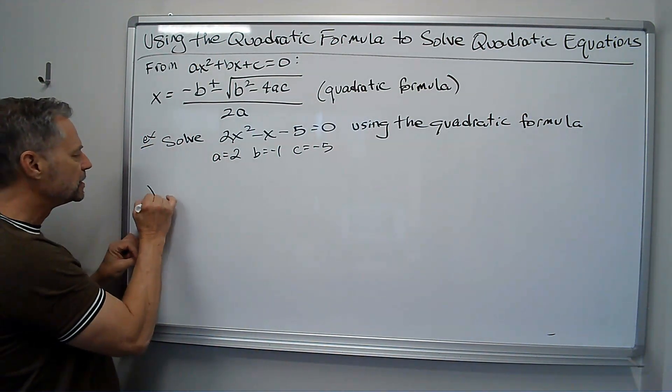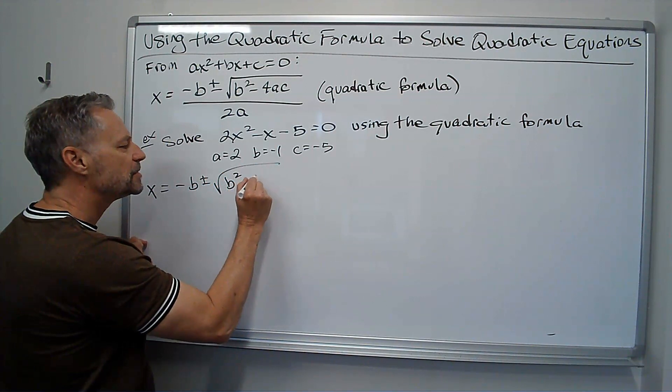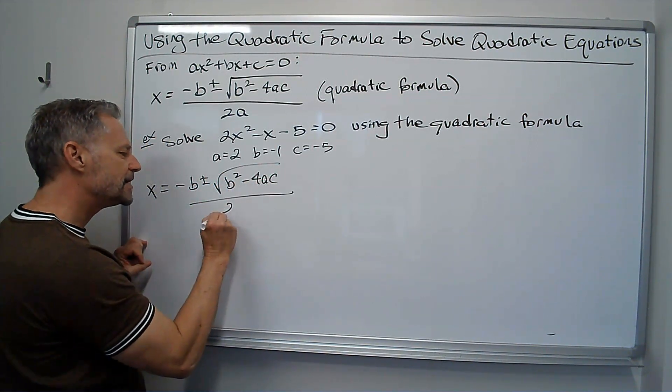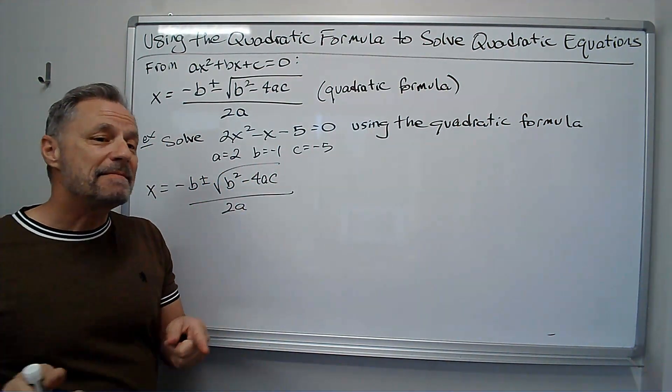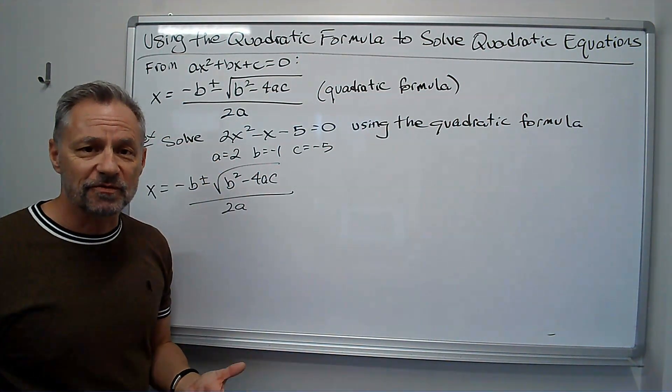Okay, so let's use the formula. So x equals negative b plus or minus the square root of b squared minus 4ac all over 2a. And I recommend you write down the formula every time you do one of these problems until you've memorized the formula.